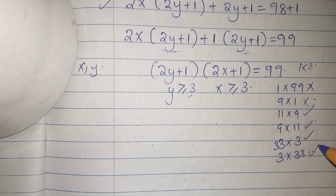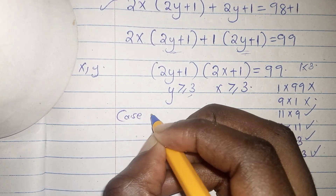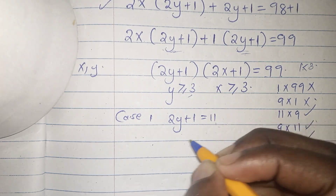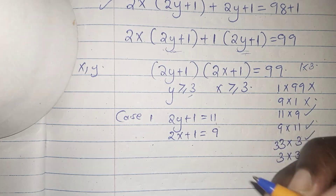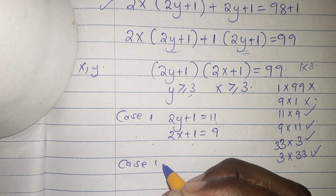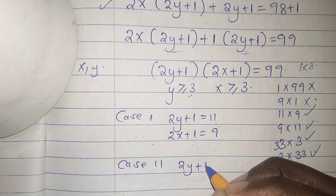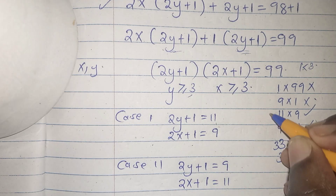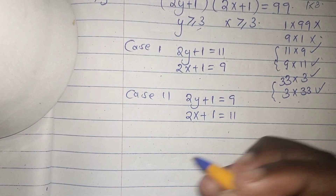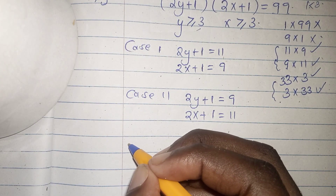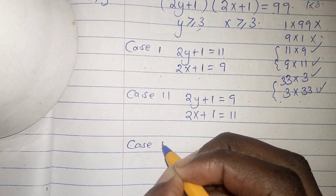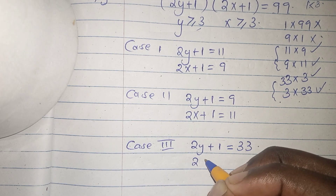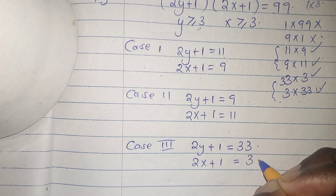Case 1: 2y plus 1 equals 11, 2x plus 1 equals 9. Case 2: 2y plus 1 equals 9, 2x plus 1 equals 11. Case 3: 2y plus 1 equals 33, 2x plus 1 equals 3.